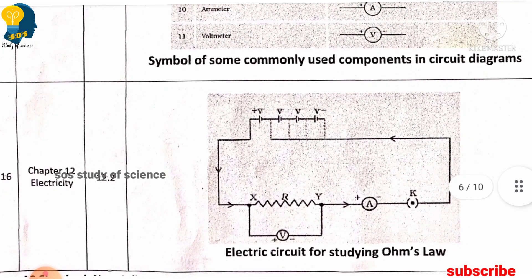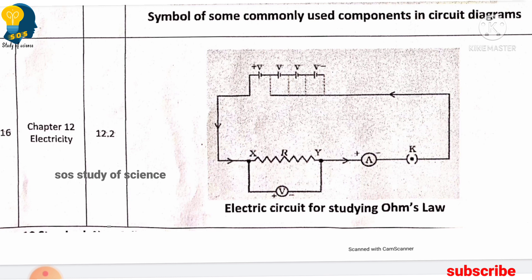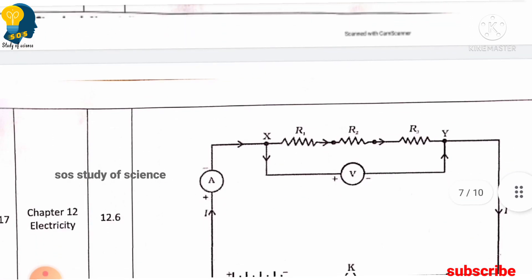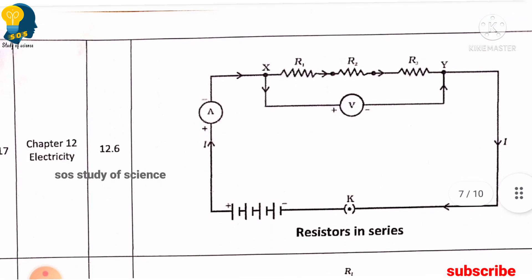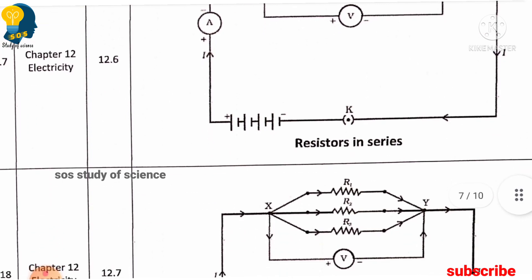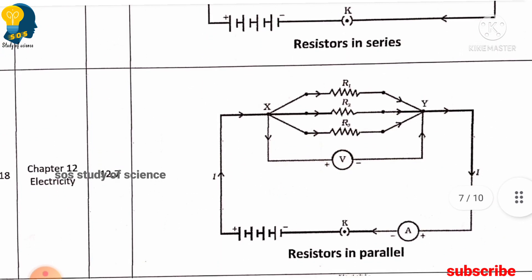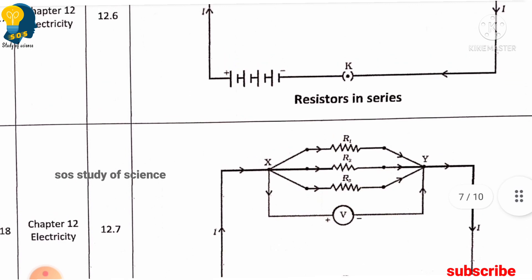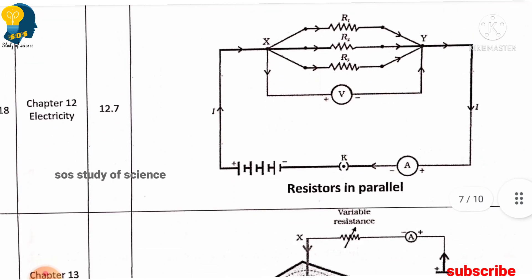All the symbols you must learn. Moving to the next diagram, you must learn electric circuits for studying Ohm's law — this is also very very important and usually asked in the examination. The next diagrams are resistors in series and resistors in parallel, also frequently asked. Most of the diagrams in the physics part are from the electricity lesson, so you must learn all of them.